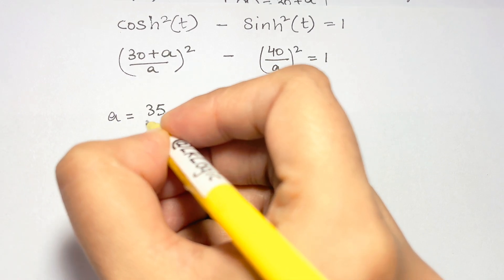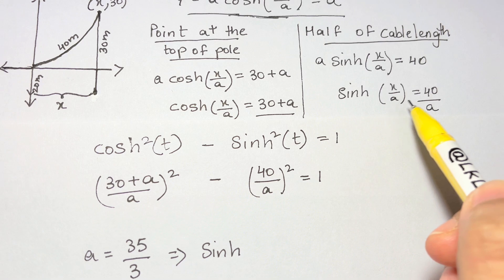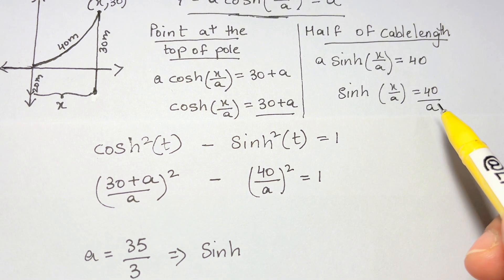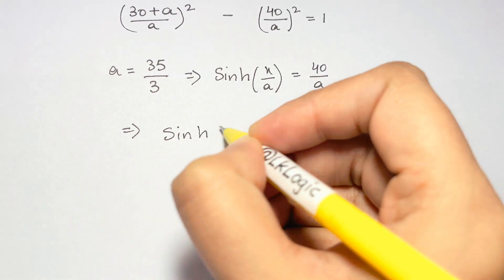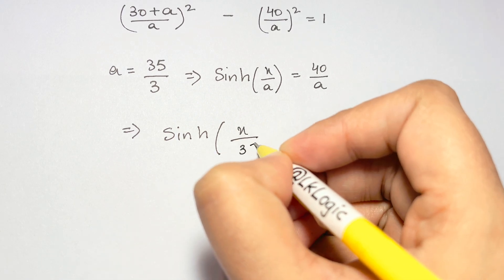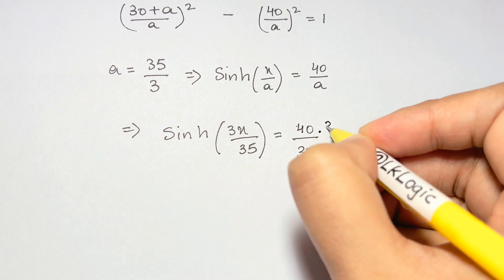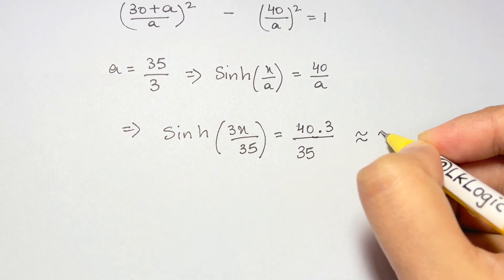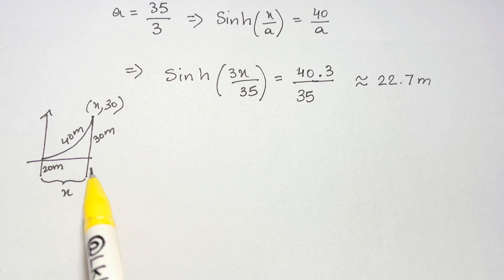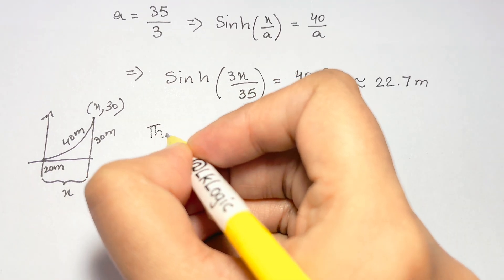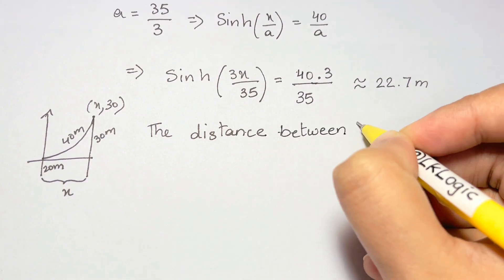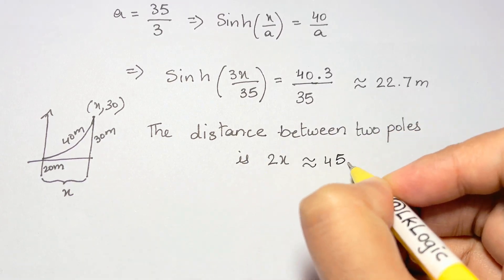We now figure out this unknown parameter and we can then use it in our second equation with sinh to solve for the value of x, and we end up that x is approximately equal to 22.7 meters, which we will then double to get the distance between the two poles as 45.4 meters.